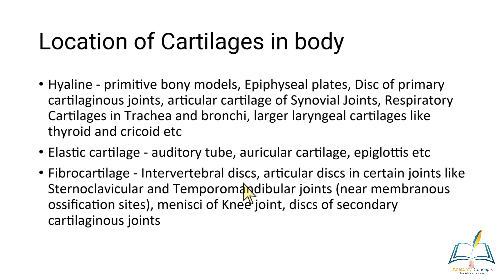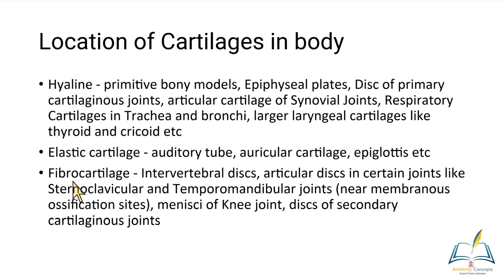Hyaline cartilage may undergo calcification at later stages in life and can be replaced by bone. Elastic cartilages never undergo calcification, and fibrocartilages also do not undergo calcification. If a joint is permanent in nature, it is not likely to have a hyaline cartilaginous plate — it will have a fibrocartilagenous plate, and we call that joint a symphysis or secondary cartilaginous joint. Fibrocartilage makes the cartilaginous plate in secondary cartilaginous joints.